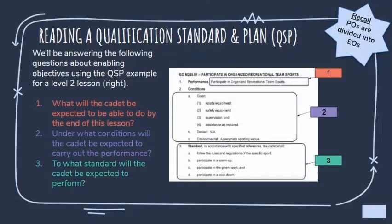The third question is: to what standard will the cadet be expected to perform? This is essentially the criteria of what the cadet needs to do in order to complete the lesson. Under the standard section, for this specific lesson, they need to do four things: follow the rules and regulations of the sport outlined in the QSP and IG, participate in a warm-up, participate in the given sport, and participate in a cool-down.